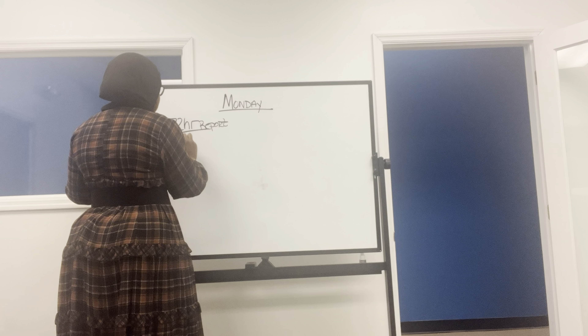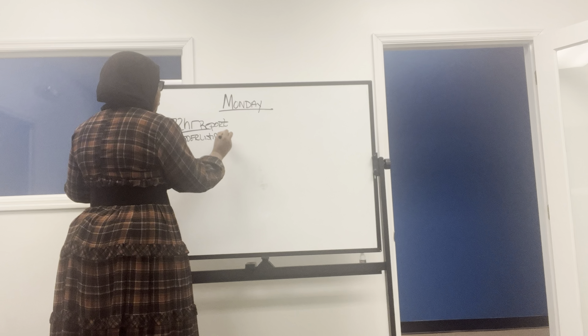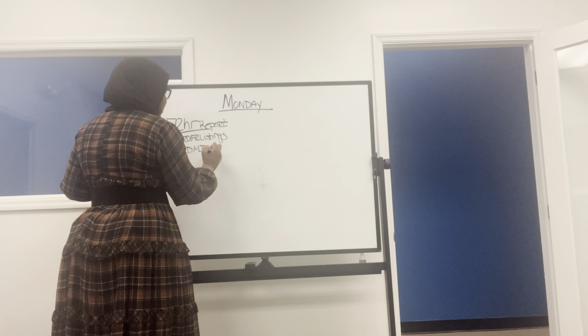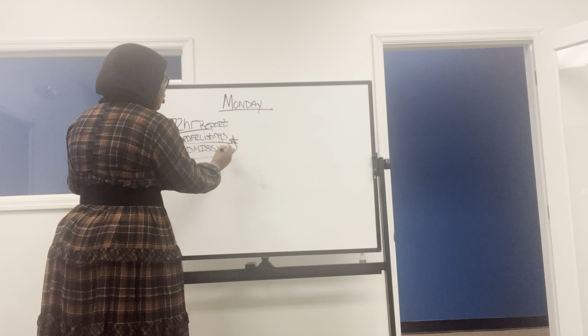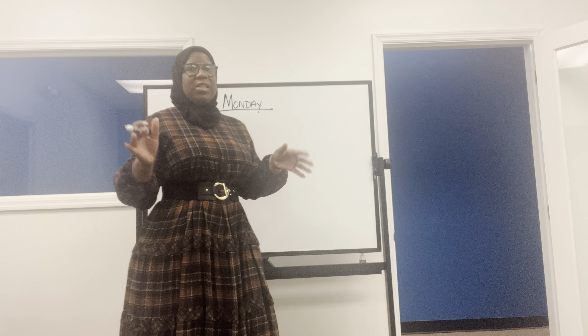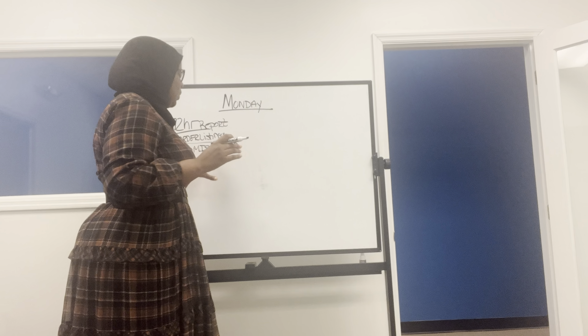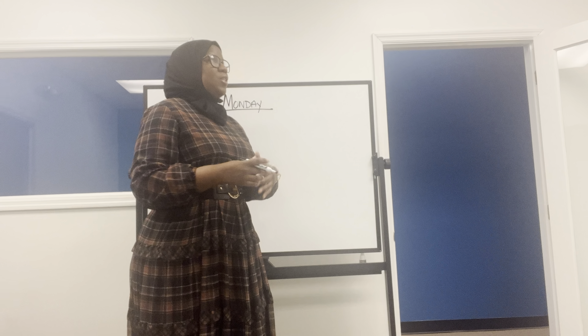You're going to be pulling order listings for any new orders. You're going to be reviewing your admission charts. If you had any admissions, the chart has to come to clinical. You have to make sure that everything, according to your policy in terms of what you're going to be doing for your new admission, needs to make sure it's all done. Don't go back and forth — bring the chart to the meeting.